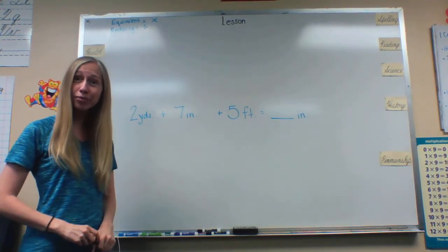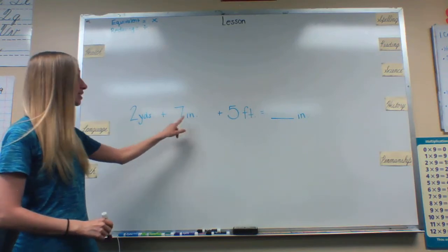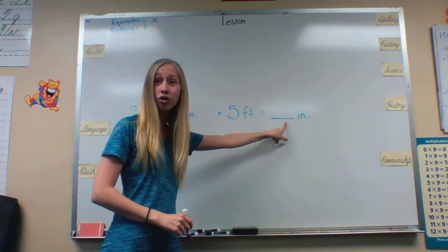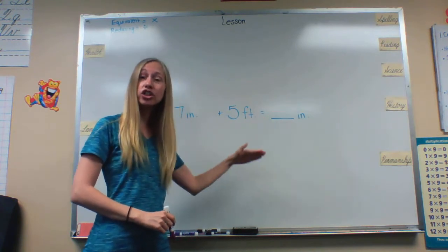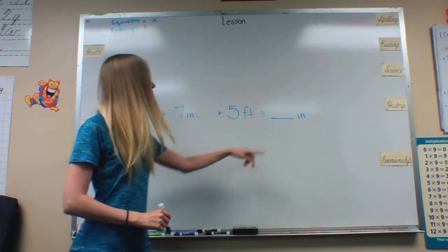Next we're going to be talking about measurement equations. As you can see we have two yards plus seven inches plus five feet equals how many inches. We want to turn everything into inches since that is what we are looking for.